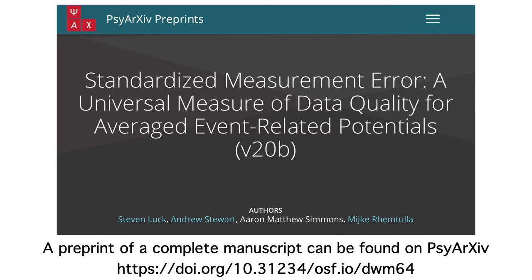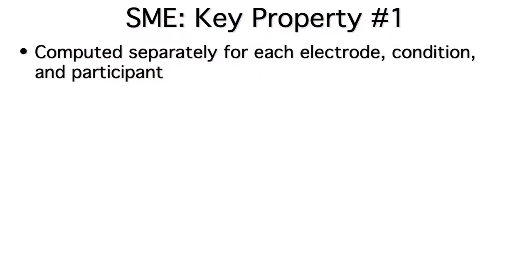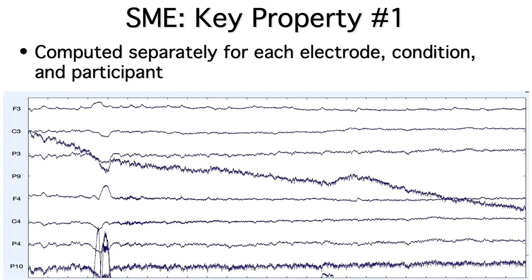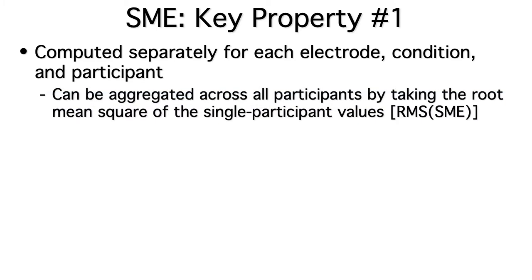The SME has three key properties. First, it's computed separately for each electrode, condition, and participant, so you can use it to determine whether an electrode site should be interpolated or a subject should be excluded. But it can also be aggregated across all participants using what we call RMS SME, so you can determine whether a study as a whole is unacceptably noisy.